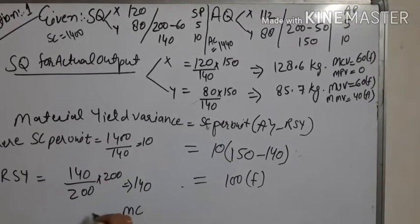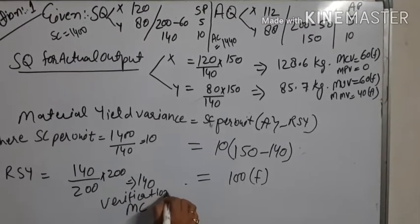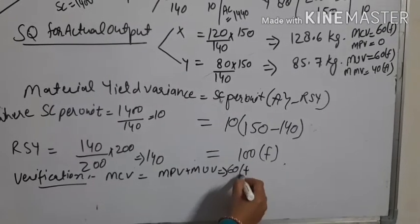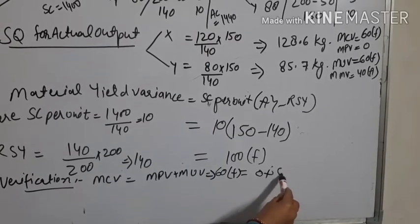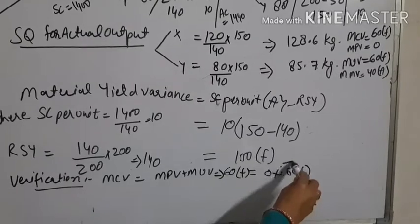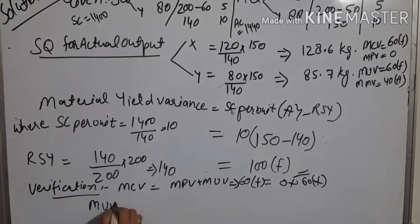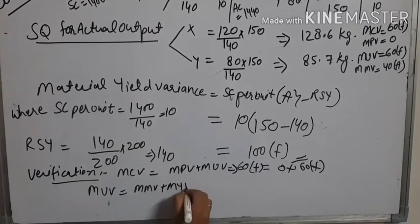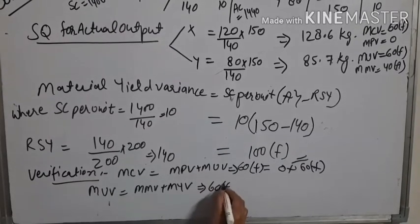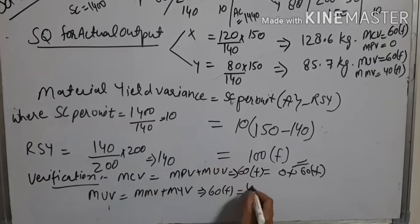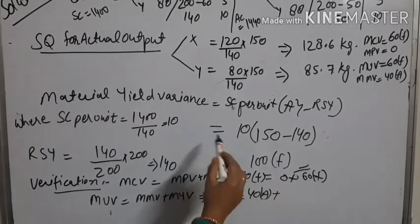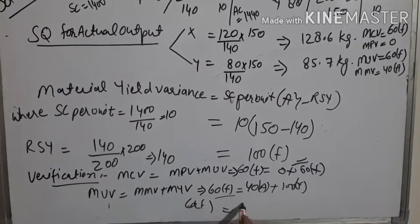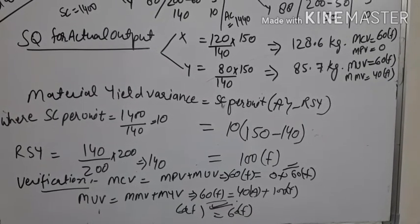Now we verify. First condition: MCV = MPV + MUV → 60F = 0 + 60F. This condition is verified. Second condition: MUV = MMV + MYV. In place of material sub-usage variance, we use material yield variance: 60F = (−40) + 100F → 60F = 60F. Both conditions are correct, which means our answers are correct. Thank you.